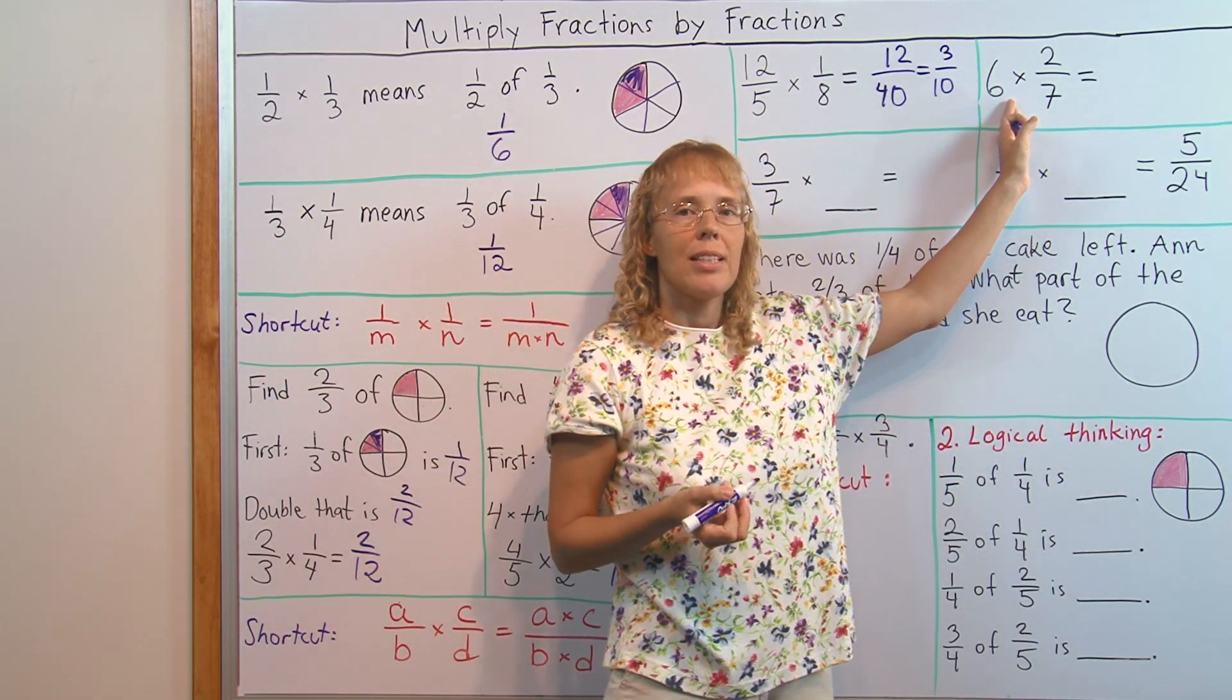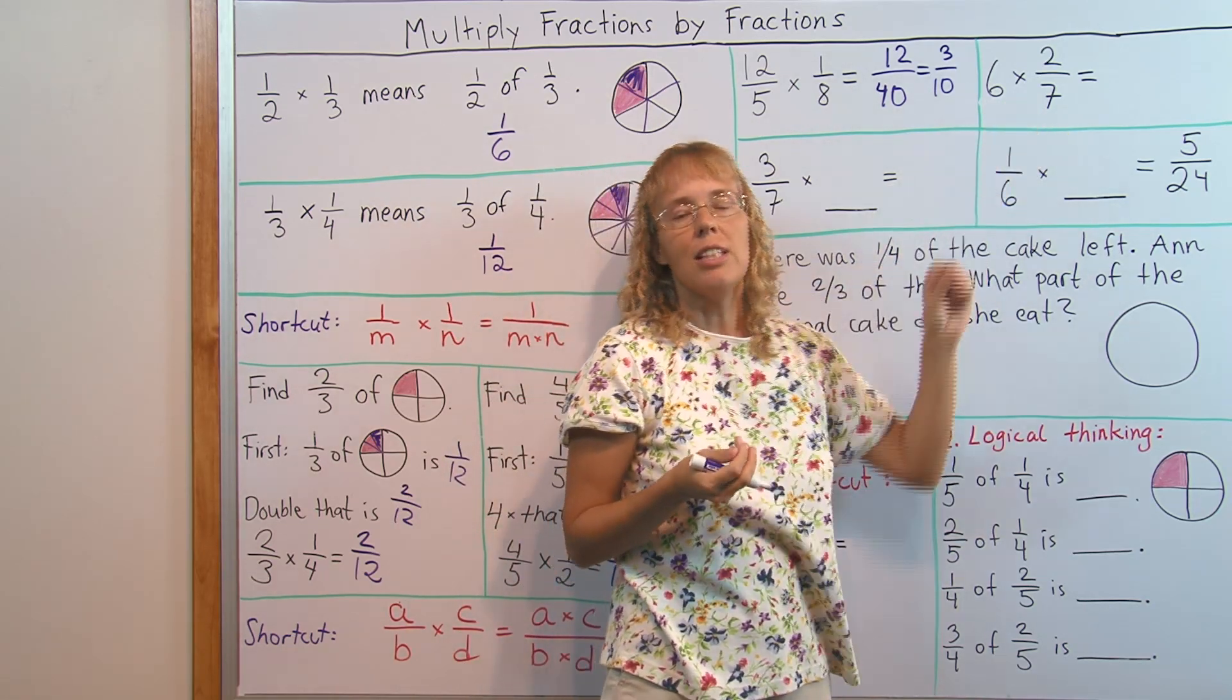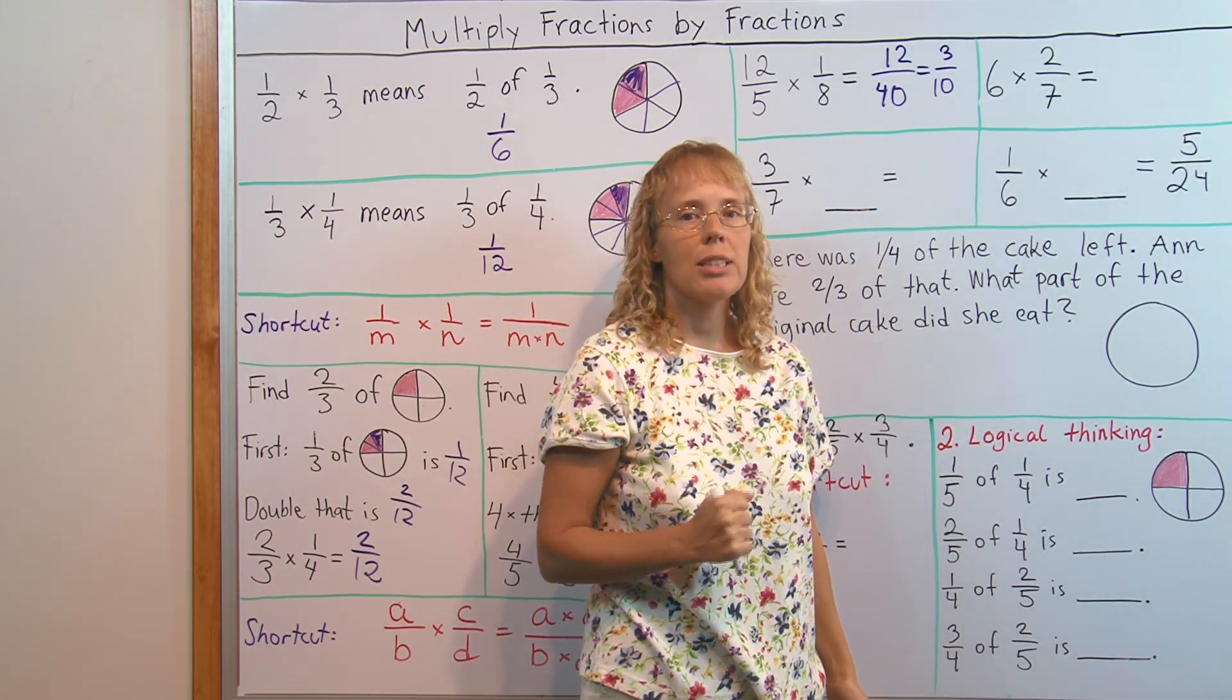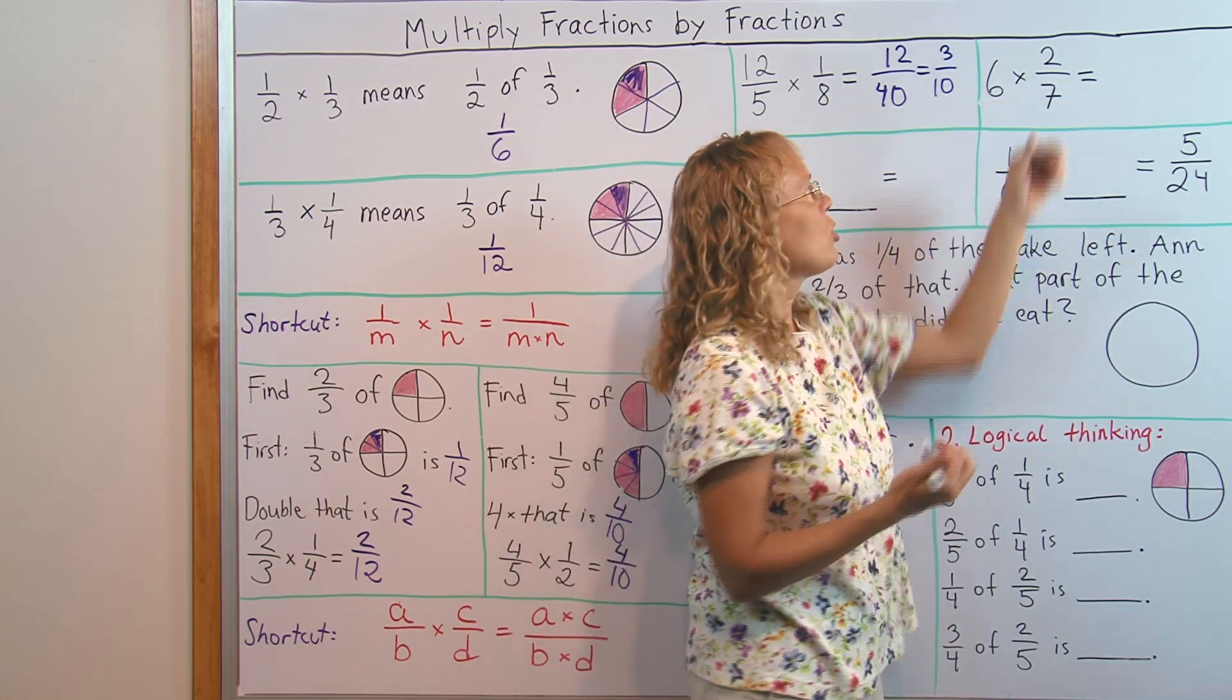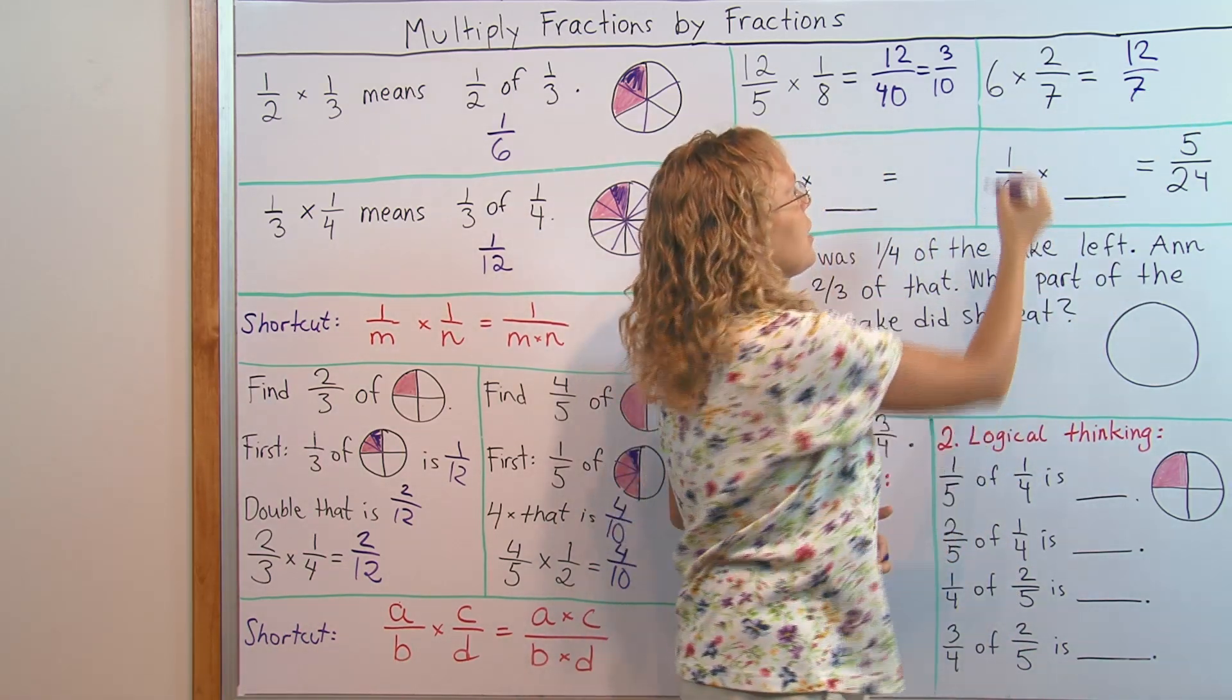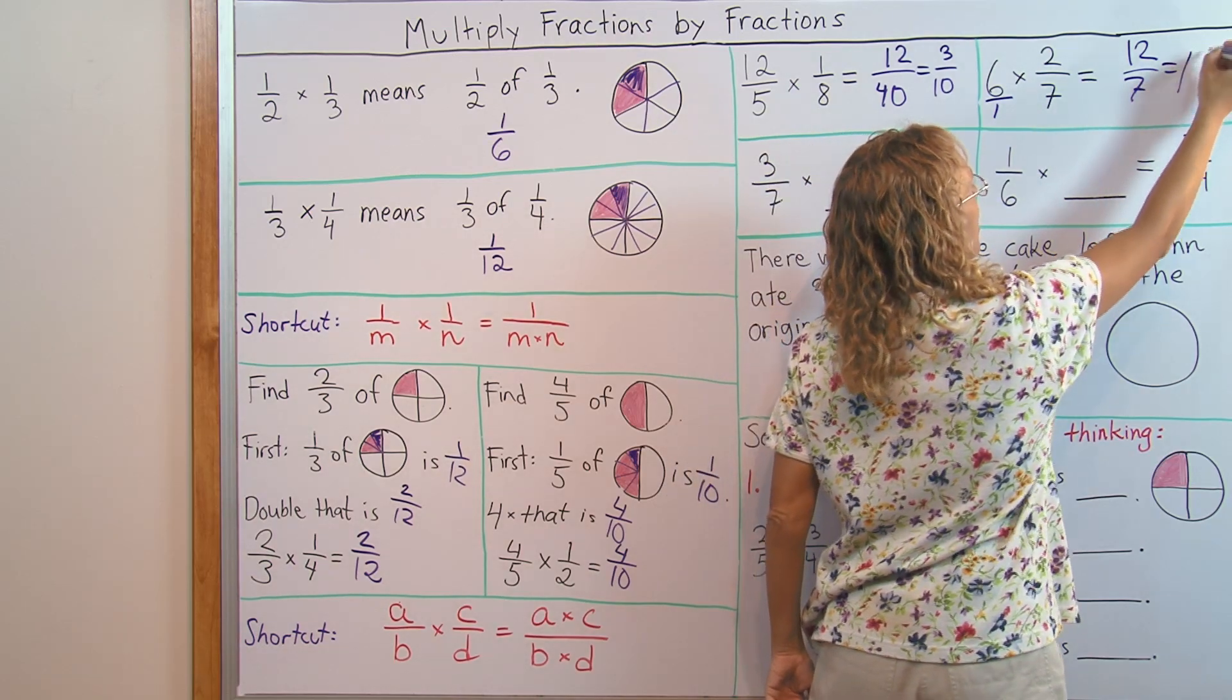This problem is actually not a problem of multiplying fractions by fractions. I threw it in there because students need to be reminded that it's not going to be solved by 6 times 2 over 6 times 7, which is a common mistake students can make. They need to remember that when it's a whole number times a fraction, you go 6 times 2 and then your denominator doesn't change, it's 7. Or they can remember that 6 is actually 6 over 1 as a fraction, and then they can use the shortcut as here. This can be written as a mixed number then.